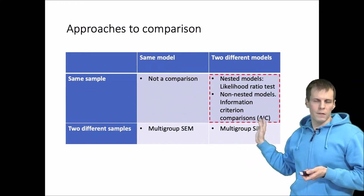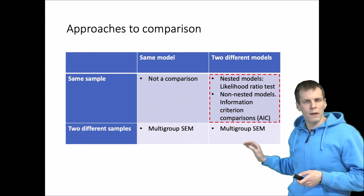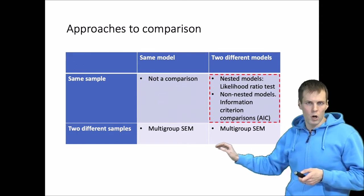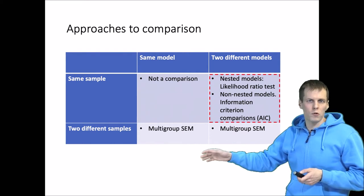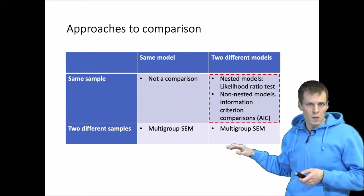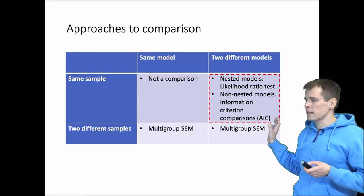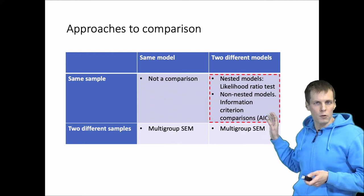The reason is that if we have the same model and same sample, that's not a comparison. And if we have two different samples, then that is actually multi-group structural equation modeling, which is estimated in one go and it's not post-estimation comparison. So comparing models post-estimation, we have the same sample, or the same groups if we do multi-group SEM, but two different models.